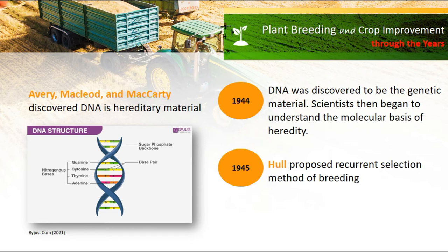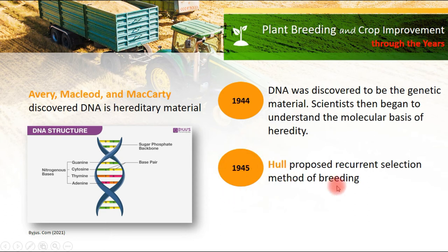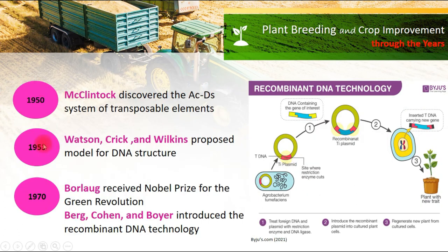Scientists began to understand the molecular basis of heredity. Avery, McLeod, and McCarty discovered DNA as the hereditary material in 1944. In 1945, Hall proposed the recurrent selection method of breeding. In 1950, McClintock discovered the AC/DS system of transposable elements. In 1953, the model for DNA structure was proposed by Watson, Crick, and Wilkins.